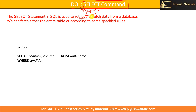Suppose we have a database and data is stored in the database, but if you want to get the data from a database — if you want to fetch or view data from a particular database — in that case we can use the SELECT command. We can fetch either the entire table or according to some specific rules or conditions.